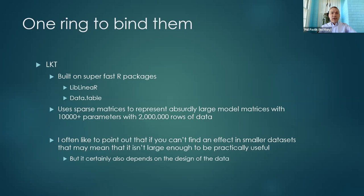This approach has allowed us to handle very large datasets. I've done models with greater than 10,000 coefficients and 2 million rows of data in real time on my home computer. It seems like people are often looking at larger datasets without necessarily having a good reason. If you can't find an effect in a smaller dataset with 100,000 or 200,000 observations, it might mean it's not large enough to be practically useful. It also depends a lot on the design of the data.